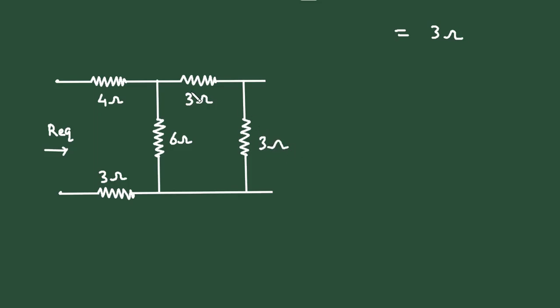Now this 3 ohm and this 3 ohm are connected in series. So it will be 3 plus 3, equal to 6 ohm.